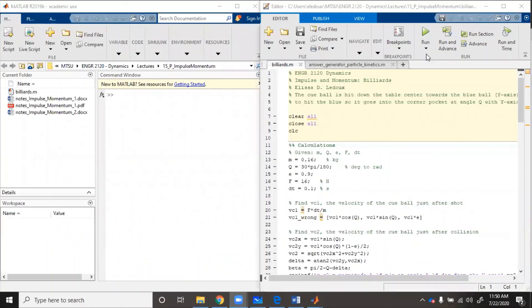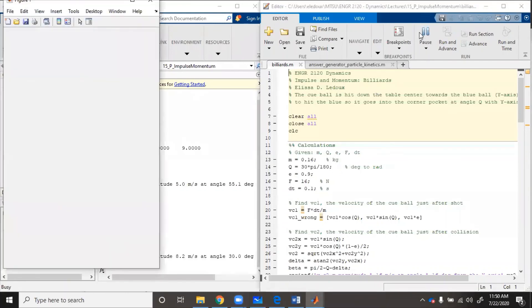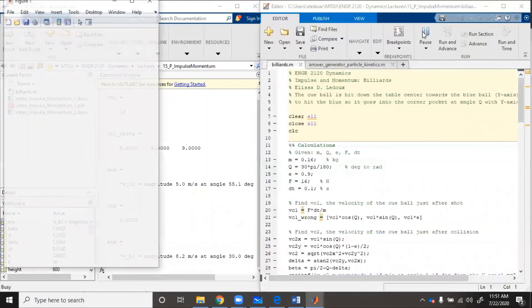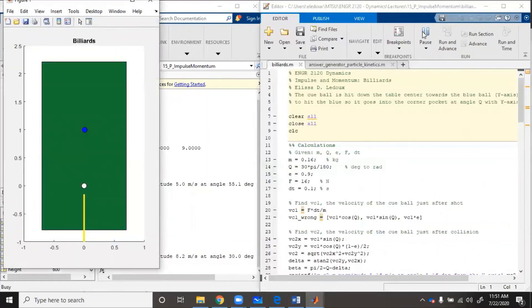So now we're going to simulate this. So if we run the simulation, we can see the angle q represents theta, coefficient of restitution, applied force, and time period. So if we run the simulation, we can see cue stake hits, white ball goes, blue ball goes. We'll run it one more time. State zero, state one, state two.